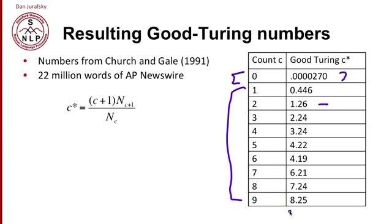And if you look at the actual values of these counts, 8.25 for 9 and 7.24 for 8, you'll notice that in a very large number of cases, the discounted count has a very close relationship with the original count. It's really the original count minus 0.75, or somewhat close to that. So in practice, what Good-Turing often does is produce a fixed small discount from the counts.